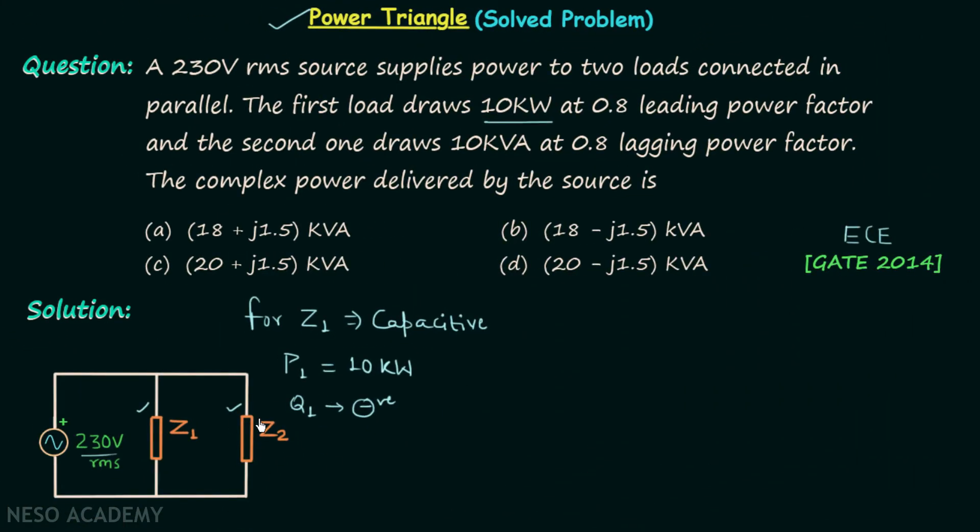Now moving on to the second load. According to the question, the second load is drawing power equal to 10kVA at 0.8 lagging power factor. When you focus on the unit you understand it is the apparent power and the power factor is lagging. This means Z2 will have inductive nature and the reactive power Q2 will be positive.